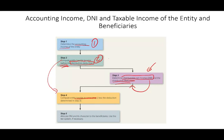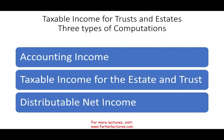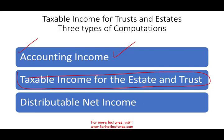Once we have the distribution deduction, we go back and compute taxable income as step two minus step three. For example, if step two gives $10,000 and the deduction is $2,000, then $10,000 minus $2,000 gives us $8,000 as actual taxable income. The big picture: we're going to compute accounting income, then taxable income for estate and trust, and we need to know DNI to find the distribution deduction.